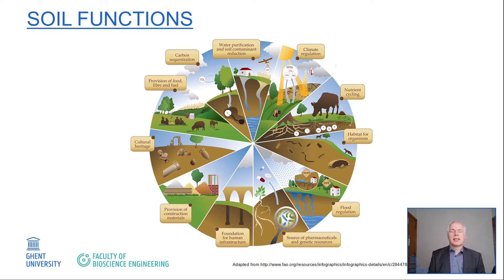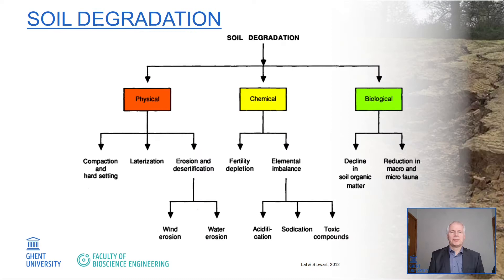Soil has a range of functions. It is important for water purification, contaminant reduction, climate regulation, nutrient cycling. It is the habitat for organisms, it is the substrate for our buildings and so on. That soil is easily degraded — we have a diagram showing all kinds of soil degradation processes. These can be categorized into three: physical, chemical and biological. What we are dealing with today is only one specific form of soil degradation — it is the chemical degradation.